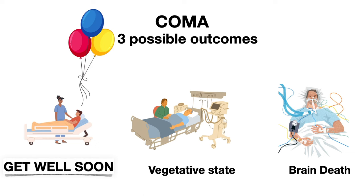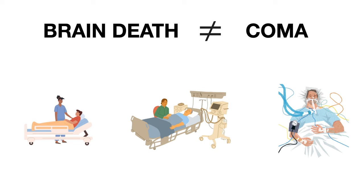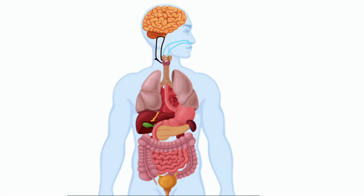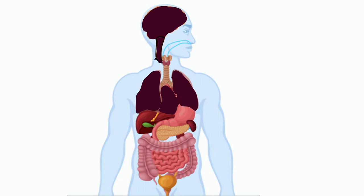Brain death is not coma. Brain death means the whole brain has died — both the cortex and the brainstem. Thus, one cannot breathe and cannot get oxygen, and gradually all organs die.